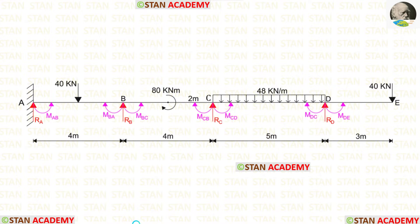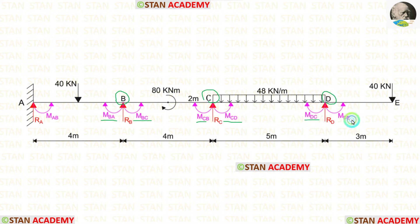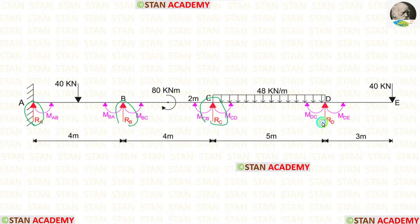In this beam, there are 7 moments we have to find. At point A, there is a fixed support, giving moment MAB. At joint B, there are 2 moments: MBA and MBC. At joint C, there are 2 moments: MCB and MCD. At joint D, there are 2 moments: MDC and MDE. So in total, we have to find 7 moments. We also have to find 4 vertical reactions: RA, RB, RC, and RD.